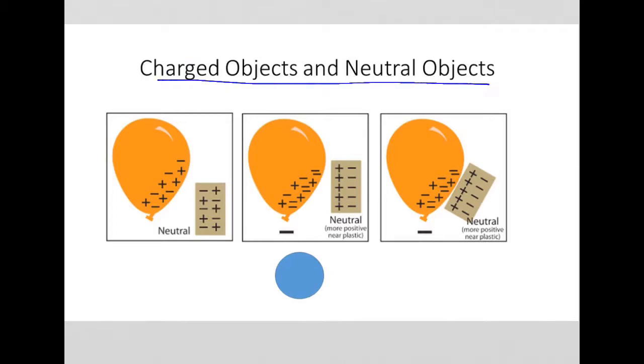Charged objects and neutral objects also have interesting interactions. Two neutral objects will not be attracted to each other. But a negatively charged object and a neutral object will ultimately be attracted to each other.